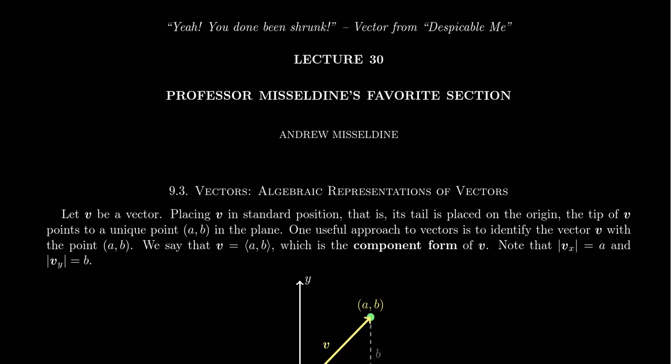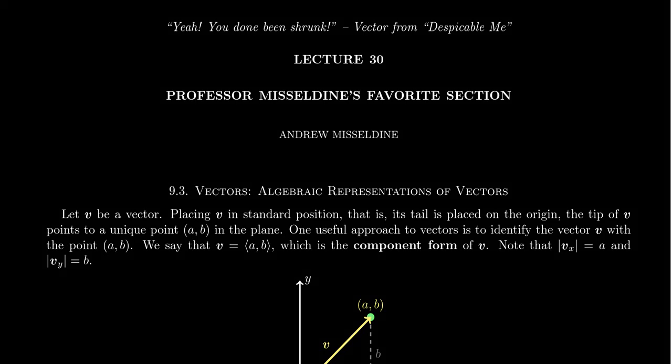Welcome back to our lecture series, Math 1060, Trigonometry for Students at Southern Utah University. As usual, I'll be your professor today, Dr. Andrew Misseldine. In lecture 30, we're going to continue to talk about vectors, and in section 9.3, we're going to talk about the algebraic representation of vectors. Now, I don't usually draw much attention to the really obscure and goofy titles to our lectures here, but I figure since it's named after me, I should probably say something about this.